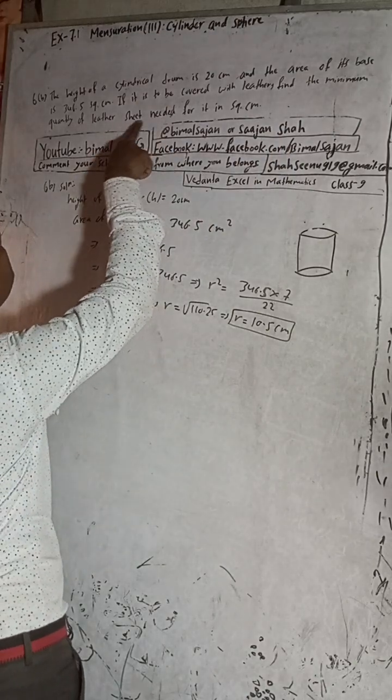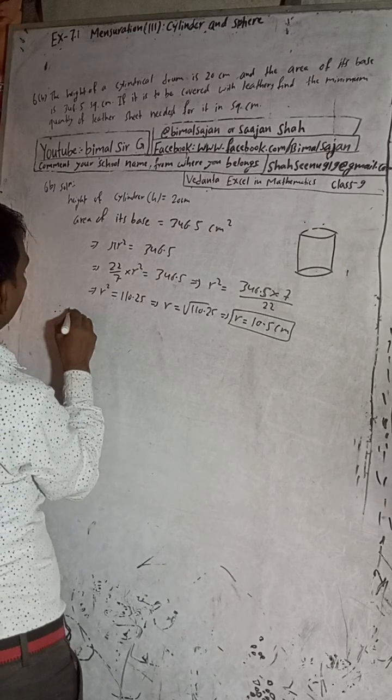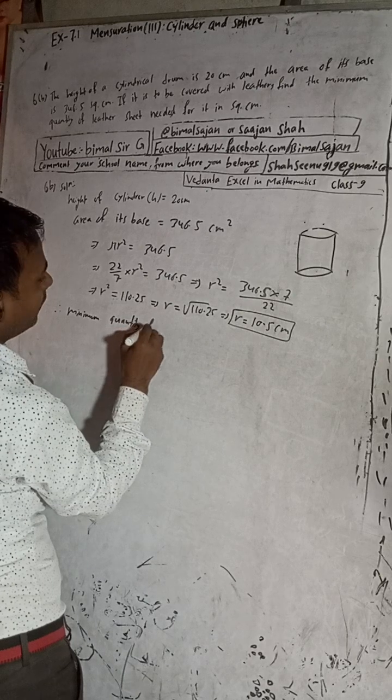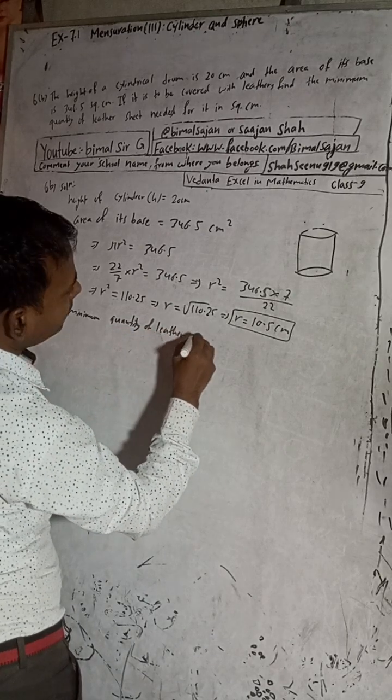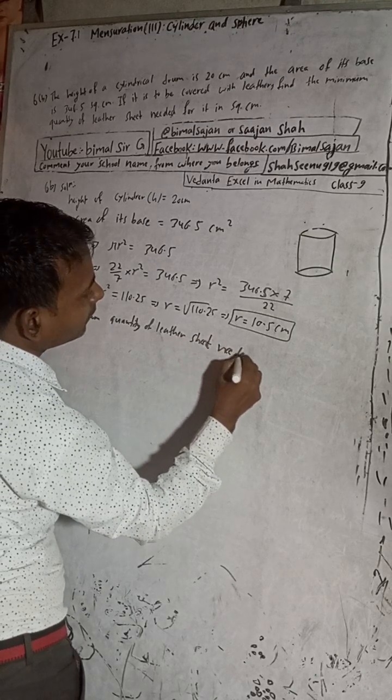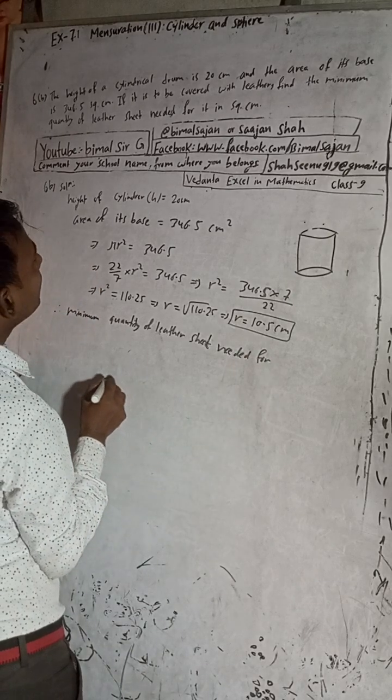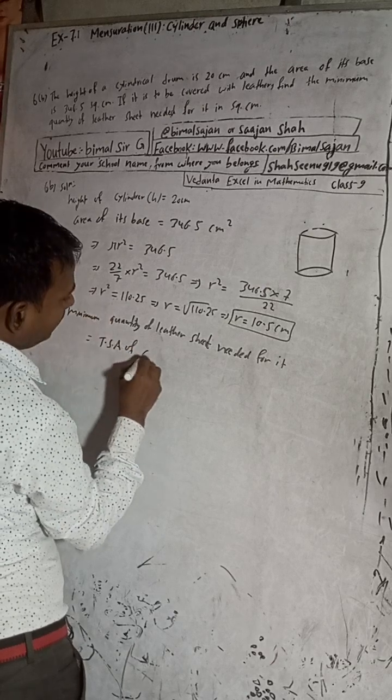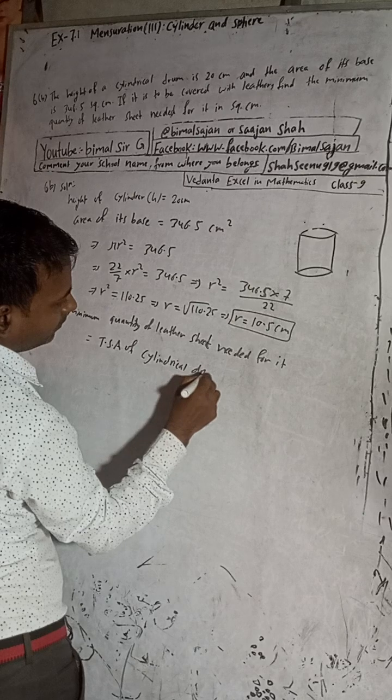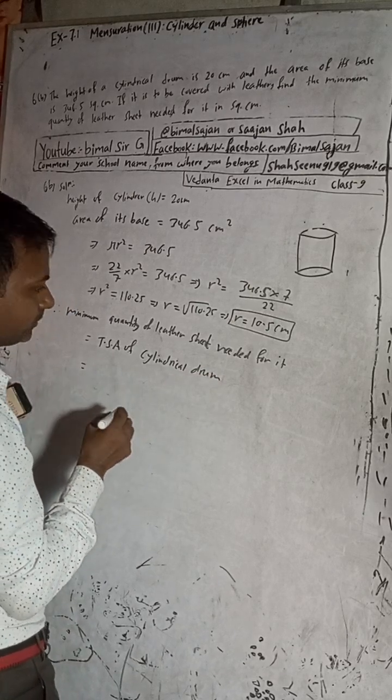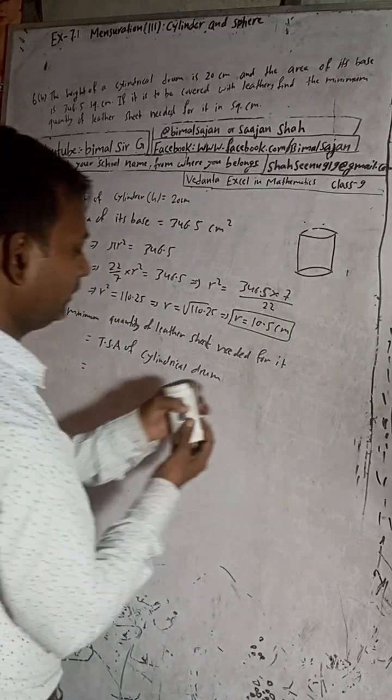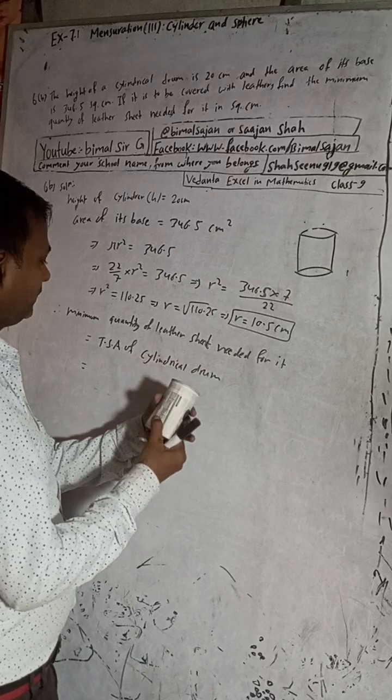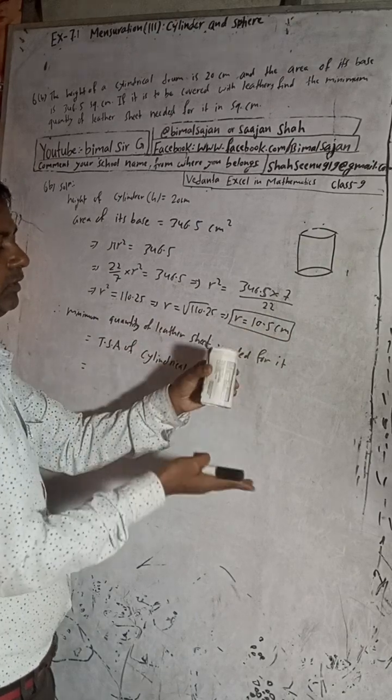It is equal to total surface area of cylindrical drum. This is our cylinder. Total surface area means this curved surface area plus this area plus this area. To find this curved surface area, suppose if I cut from here, this would be a rectangle shape.